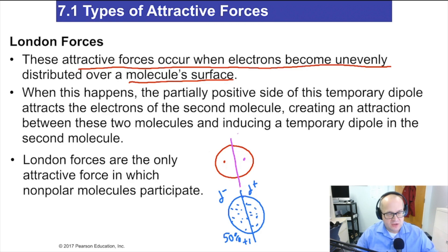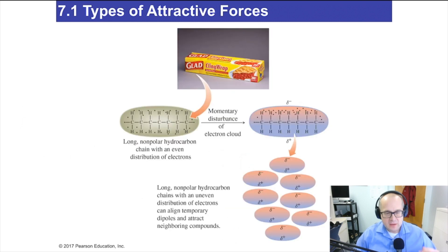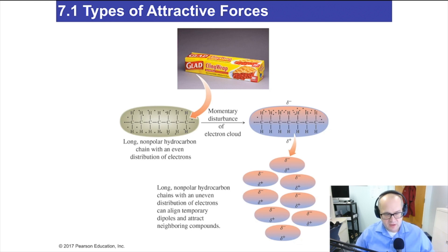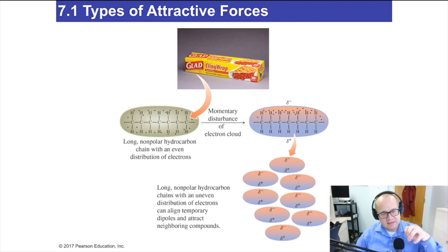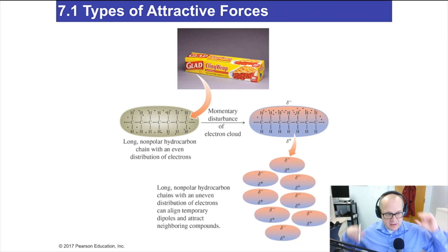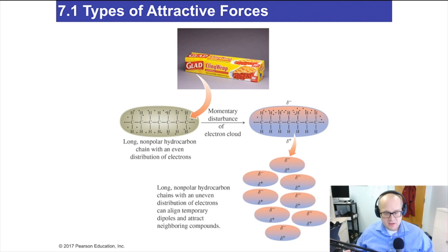This causes a temporary dipole — temporary delta positive, temporary delta negative — and that's how they attract each other. That's a London force. What kind of molecules use London forces? Nonpolar things tend to use them the most. There are London forces in polar molecules too, but the London force is the weakest of them all. Nonpolar atoms basically have no other choice but to use London forces.